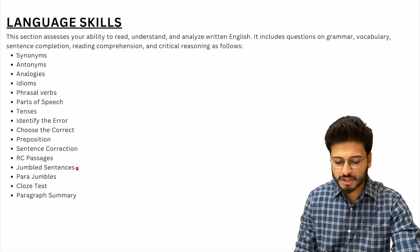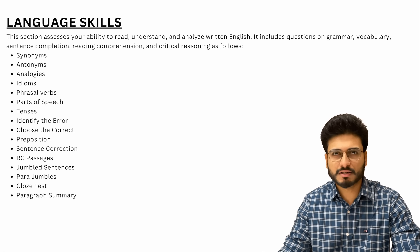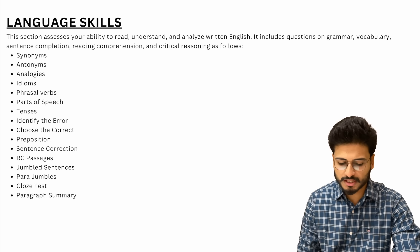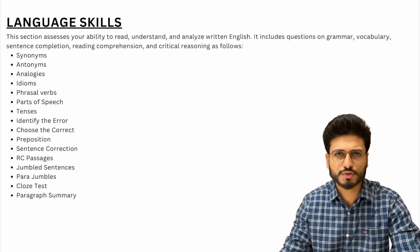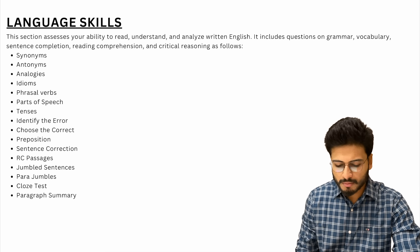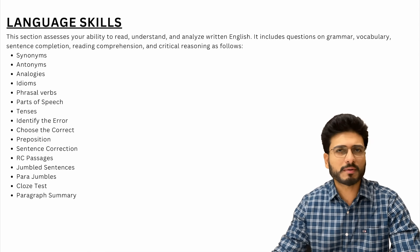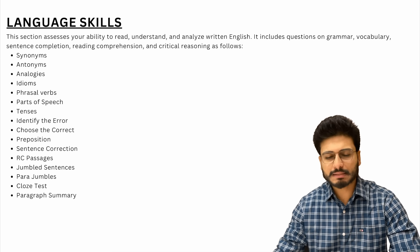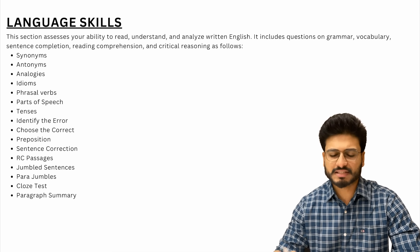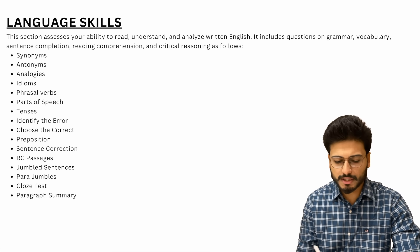If we talk about jumbled sentences, para-jumbles are normal and easy to solve. Close test and fill-in-the-blank situations are also covered. Paragraph summary — the level of difficulty is very normal. If you are well prepared for CAT, you will be able to handle the marks in Language Skills without much trouble.